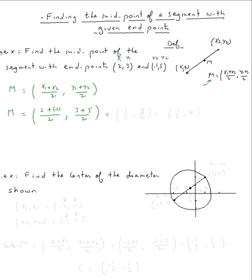So the midpoint is 2 minus 1 is 1 over 2, 3 plus 5 is 8 divided by 2, and we can simplify this. We get 1 half and 4.